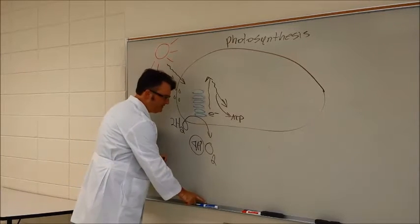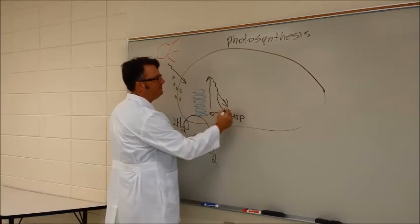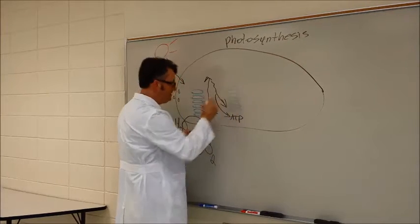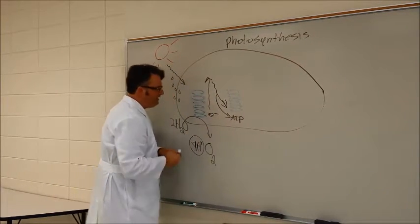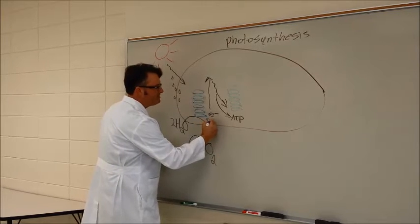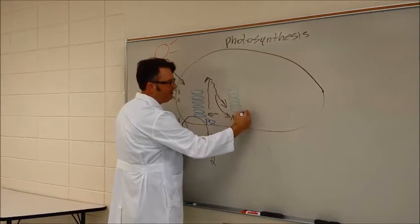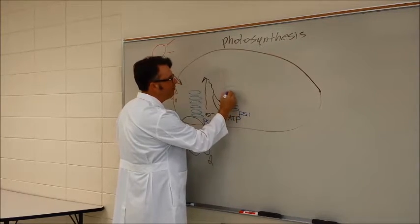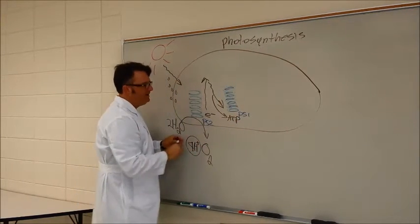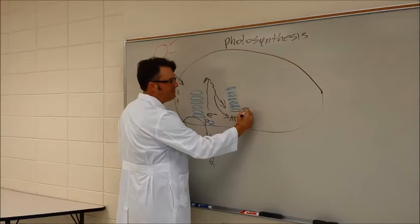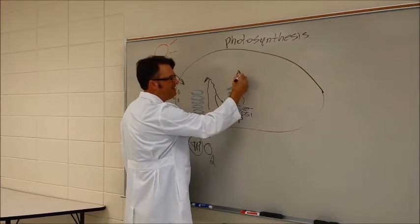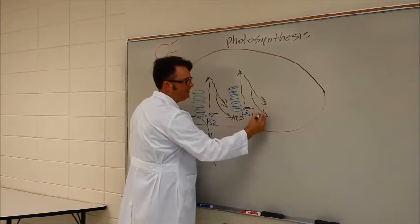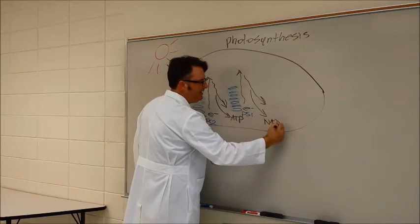There is another stack - actually I shouldn't say another stack as if there are only two - but this one is called photosystem two and this one is called photosystem one. And there is another process in which the electrons once again get excited. This time when they go back down to a lower energy state, they produce something called NADPH.